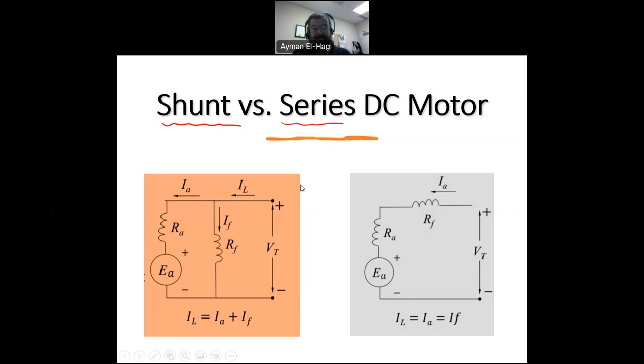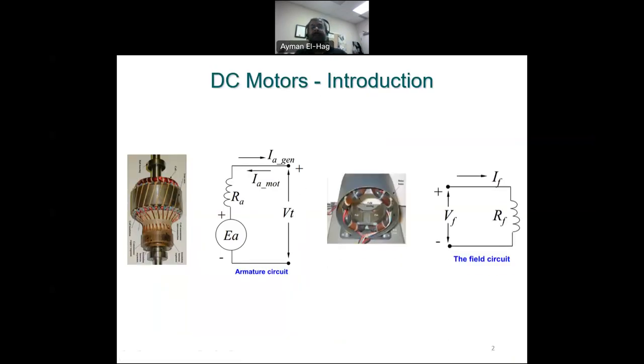Let's start with some background about DC motors. DC motors are composed of two main components. The first one is the armature circuit or the rotor. This is the rotor that rotates inside the motor. We connect the load to the shaft of the rotor. Here you can see there are windings, and for that we will have what we call the armature winding.